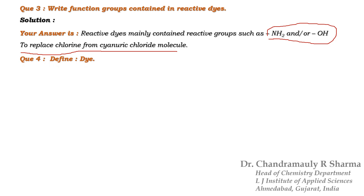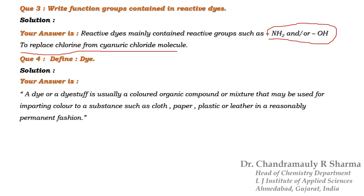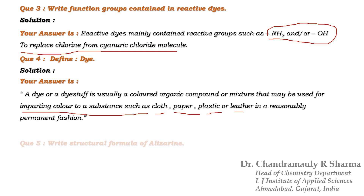Next question: What is a dye, or define dye? This is a very fundamental question of this chapter, so we can write the answer directly. A dye or dyestuff is usually a colored organic compound or mixture that may be used for imparting color to a substance such as cloth, paper, plastic, or leather in a reasonably permanent fashion. That is the basic definition of dye.